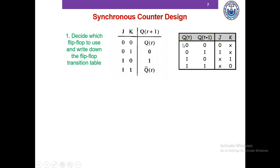To construct the transition table on the right from this characteristic table, we're trying to decide which JK inputs can cause a 0-to-0, 0-to-1, 1-to-0, or 1-to-1 transition. We're basically trying to decide which JK combinations can cause the present state to next state transition.